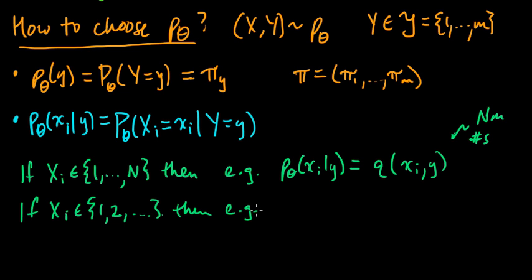Then, for example, just take any, it's pretty much up to you. Whatever distribution makes sense for that dimension of x. So you might choose, I don't know, maybe Poisson, or geometric, or whatever. Whatever makes sense for that random variable.